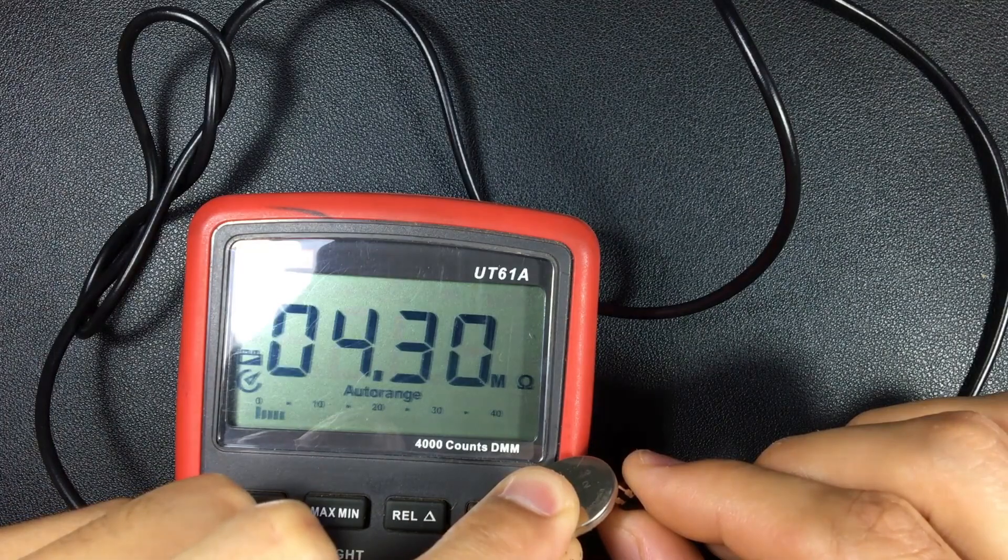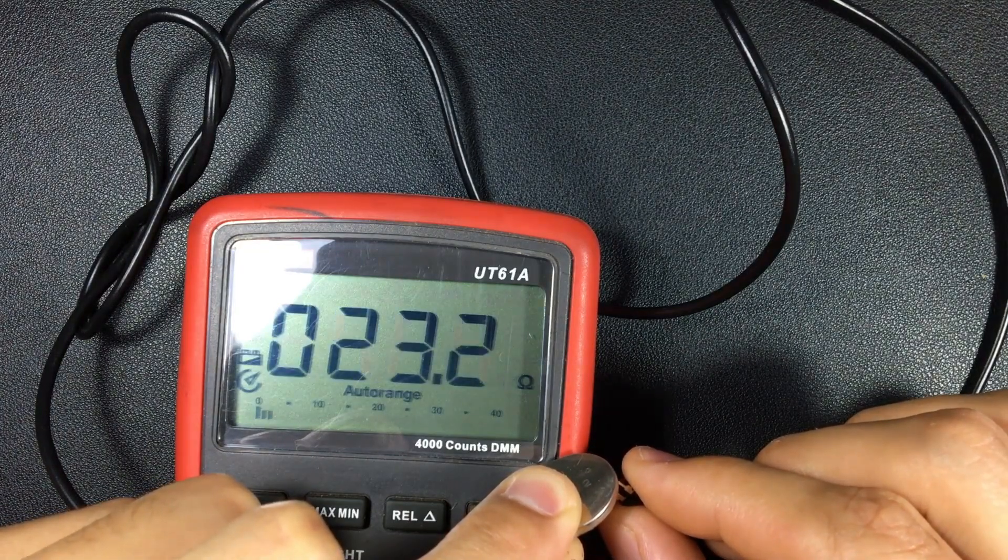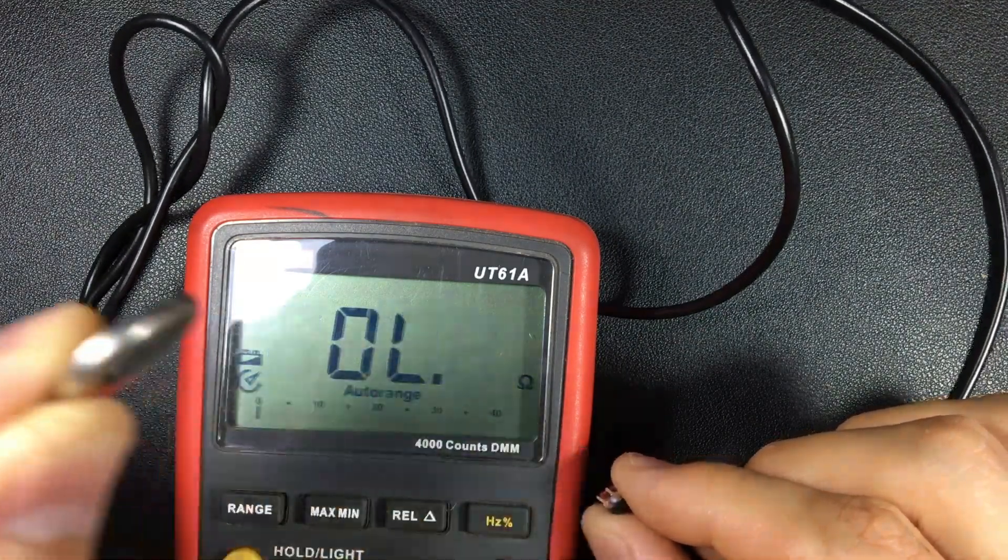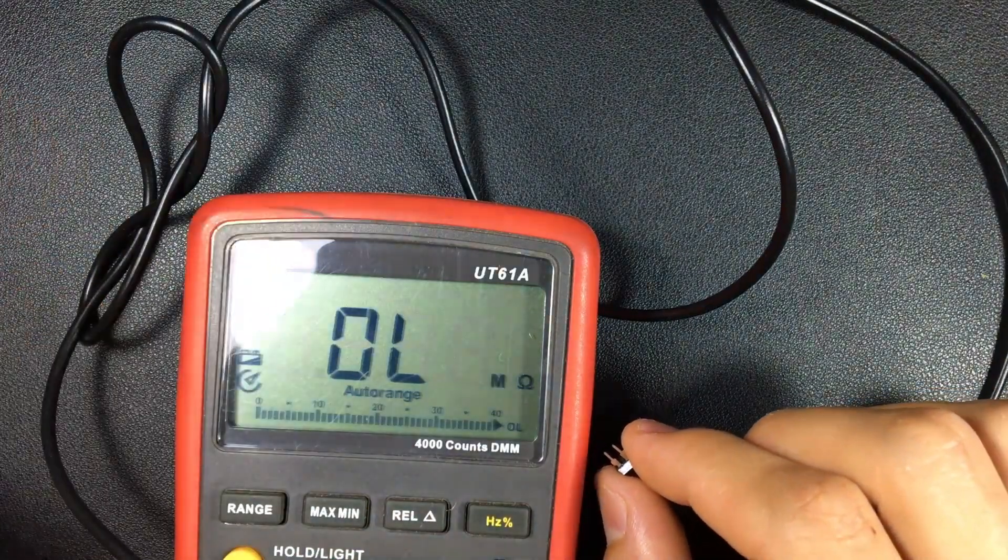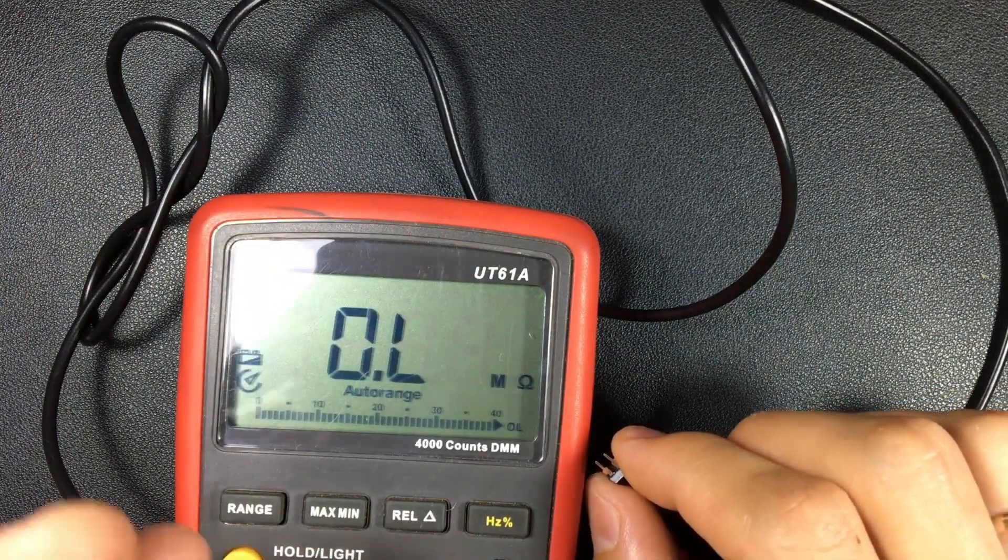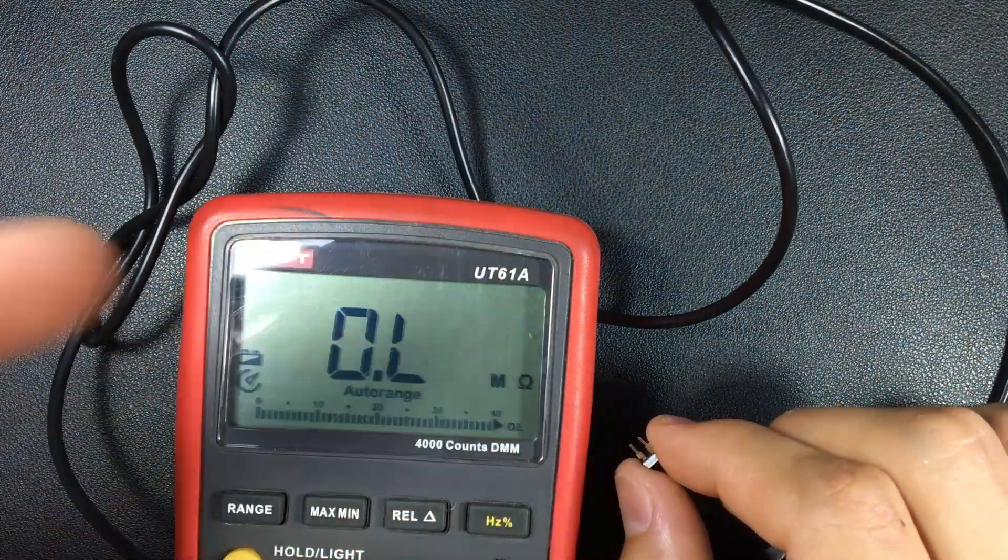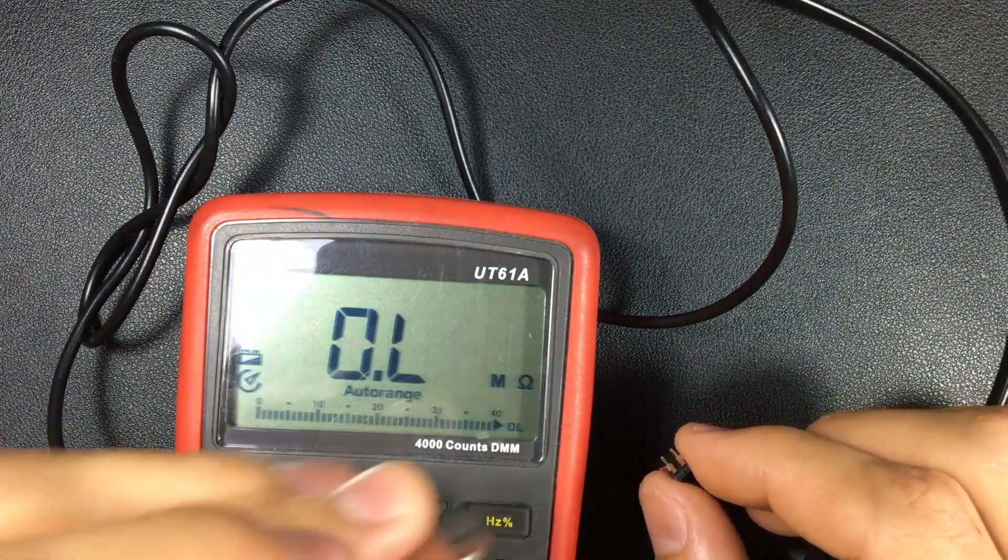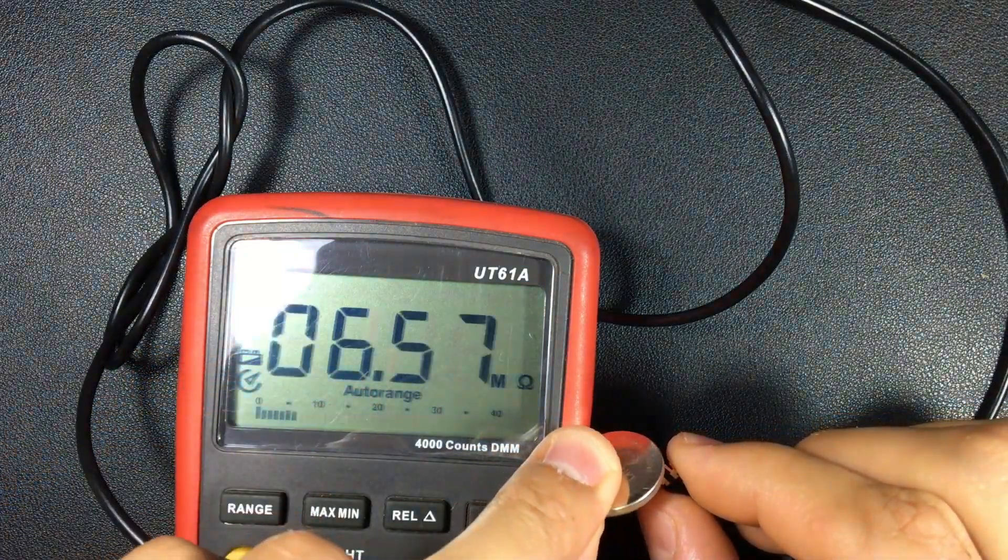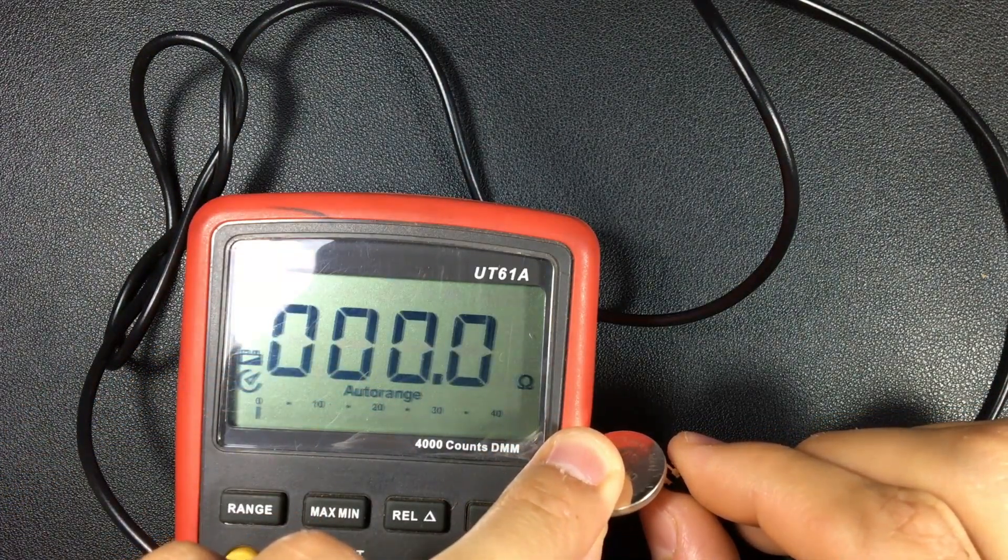There we have 20 ohms and there it falls to zero. When the internal LED is turned on, continuity is produced on the other side. It is not a zero to zero continuity because in reality it is a photo receiving circuit. It is not a direct bridge or a contact. That is why it always has some resistance but it is very low, only 20 ohms. In this case this optocoupler is working perfectly.